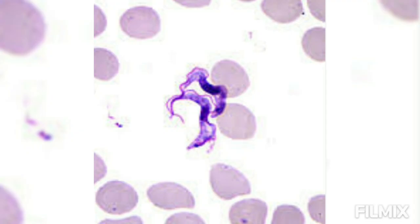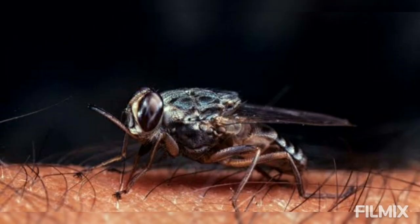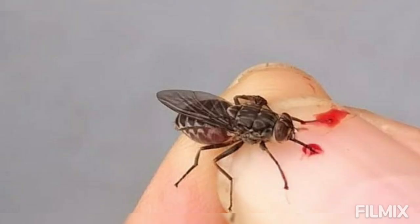Trypanosoma gambiense life cycle in tsetse fly, part 3. Development in salivary gland: the long slender forms make their way into salivary glands via the oesophagus and mouth parts of the insect. Here they metamorphose into the crithidial forms with shortened body, reduced free flagellum, and the kinetoplast in front of the nucleus.